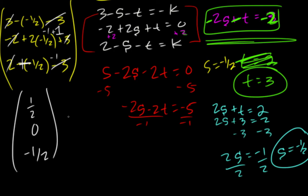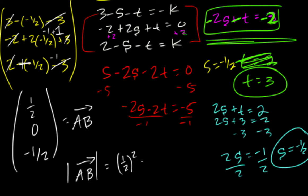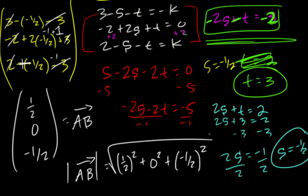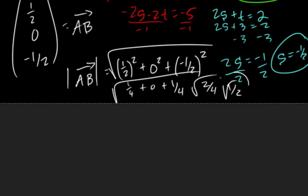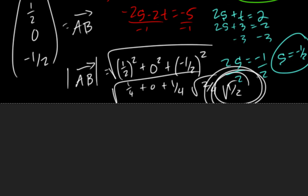So vector AB is (1/2, 0, -1/2). Taking the magnitude of AB: (1/2)² plus 0² plus (-1/2)² equals 1/4 plus 0 plus 1/4. Adding those gives 2/4 or one half under a square root. So the shortest distance between the two skew lines is √(1/2). If you need additional help, please come to math lab.